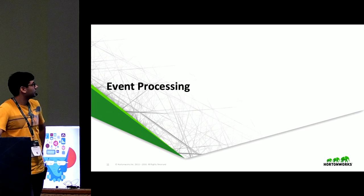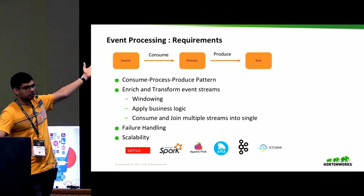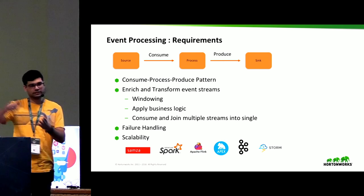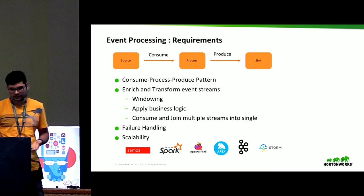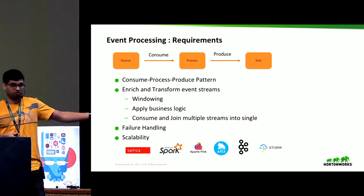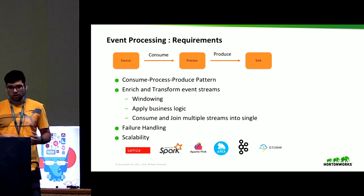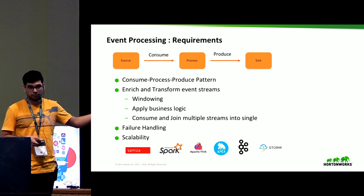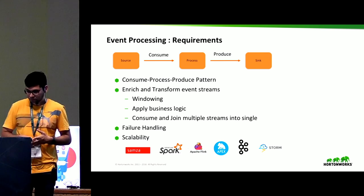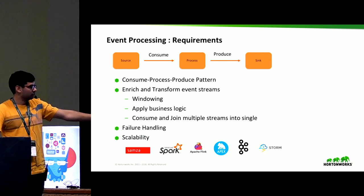The next layer is event processing, where we want to consume an event, process it, and then produce it — a consume-process-produce pattern. What we want to achieve is to enrich and transform those event streams, apply business logic like filtering nulls, and in our Wikipedia edit stream case, enrich events by adding geolocation information. You might also want to apply windowing logic or join multiple streams into a single one. This also needs failure handling and scalability. There are many solutions out there: Apache Samza, Spark, Flink, Apex, Kafka Streams, and Storm.